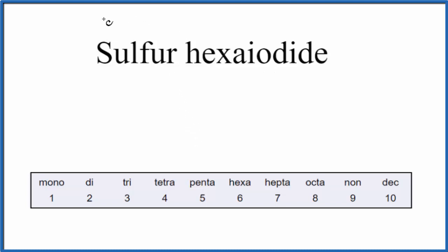So when we write the formula, we have sulfur just by itself, so that's just S, and then we have hexaiodide. So I, the iodide, we draw the iodine atom, and hexa, that means 6, like a hexagon. So we'll have SI6, and that'll be the formula for sulfur hexaiodide.